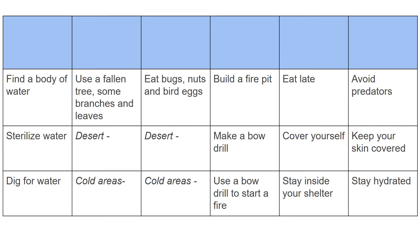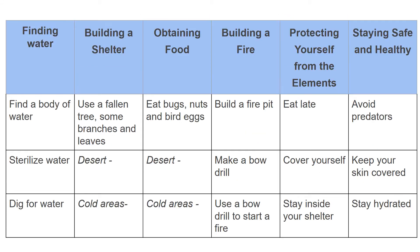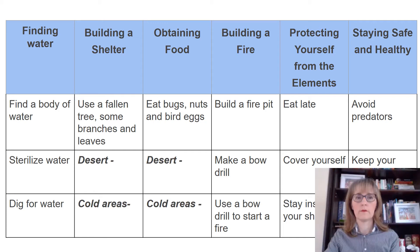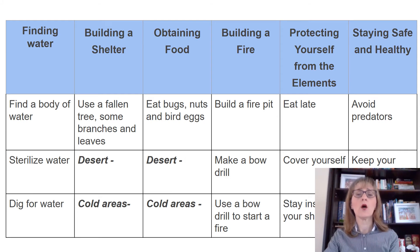This is a table with different activities. Your task is to classify the advice from your notebook according to the activities in each column. If you are not sure, you can check with the text. Do you have the same advice as titles for the columns? I am sure you do. Now you must have noticed there are parts in the table not finished yet. You will have to scan the text in order to get the information on how to build a shelter or get food in extreme conditions like deserts or really cold areas.